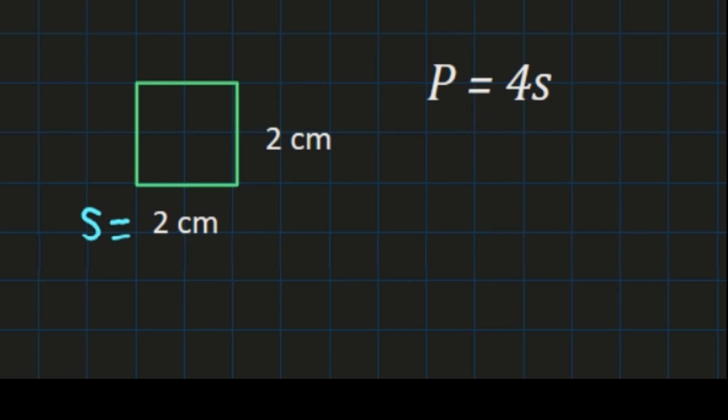Our sides are 2 centimeters, and we're going to use that formula, perimeter equals 4s. We're going to take our s, which was our side length of 2,